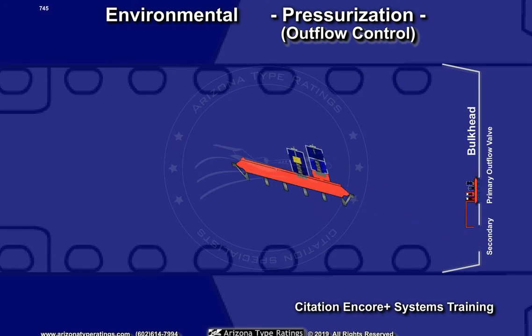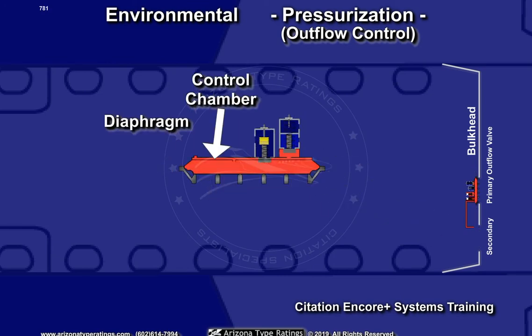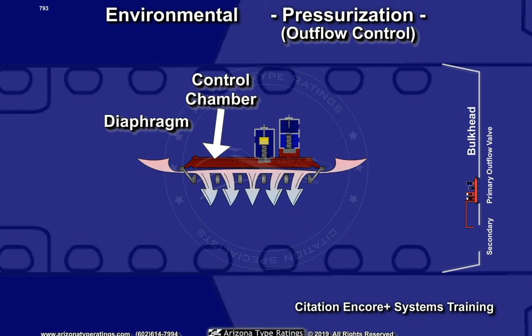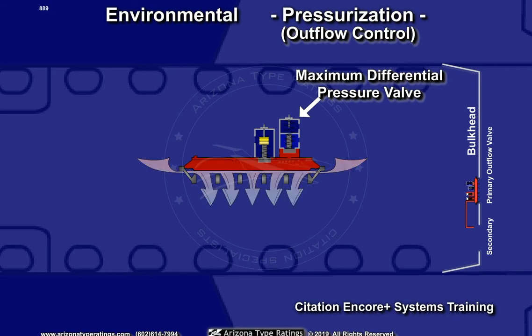Both outflow valves have a diaphragm that is controlled by the pressure delivered to the control chamber. Both valves also have a maximum differential pressure relief valve that mechanically limits the cabin pressure differential to approximately 9 psi, in the event of an over-pressurization condition.